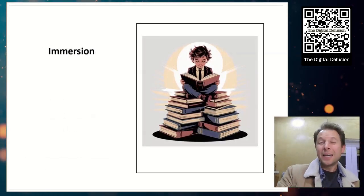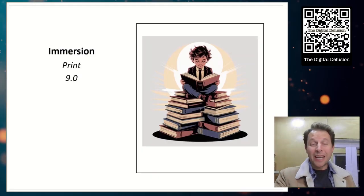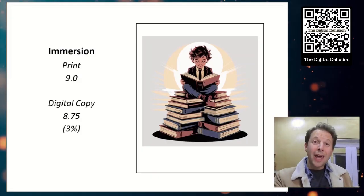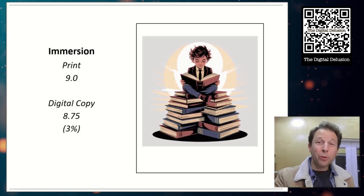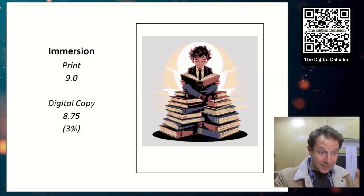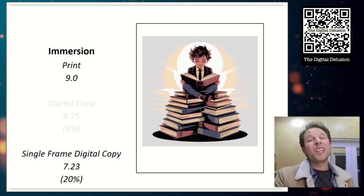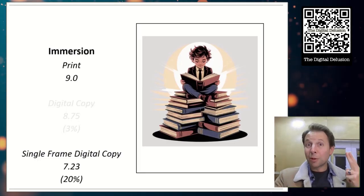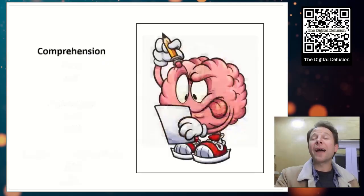Next, immersion. The kids who read the physical comic book rated a 9 out of 10 on their immersion. The kids who read the full copy digital, 8.75. So again, only about a 3% drop. But the kids who read the single cell digital copies, 7.23. That's a 20% drop compared to the kids who had the physical book. So tick number two for cognitive mapping.